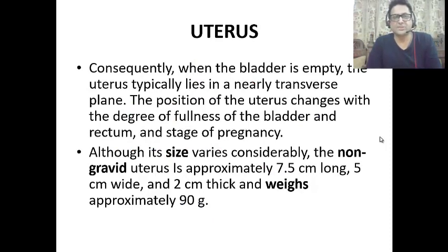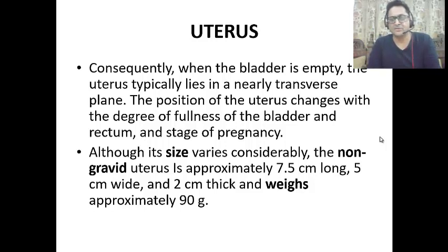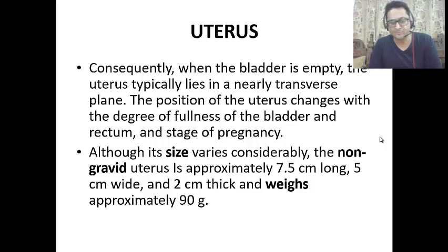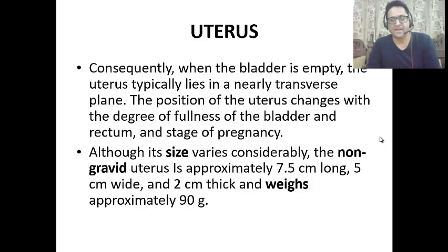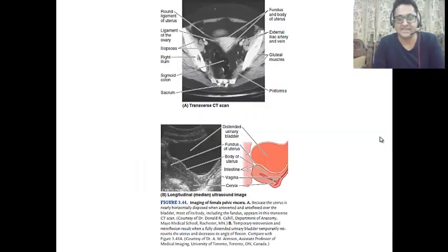The size of the uterus varies considerably. In the non-gravid (non-pregnant) state, it is approximately 7.5 cm long, 5 cm wide, and 2 cm thick, and weighs approximately 90 grams.